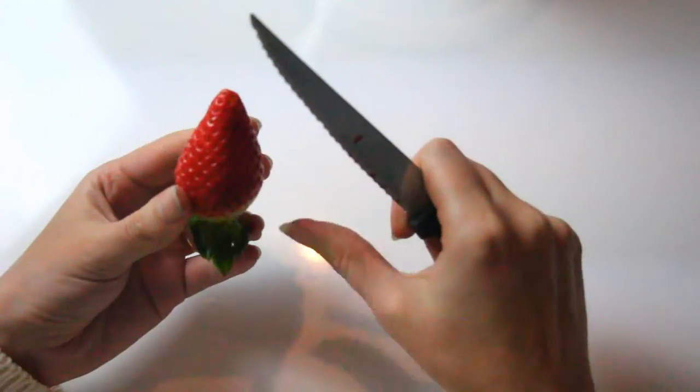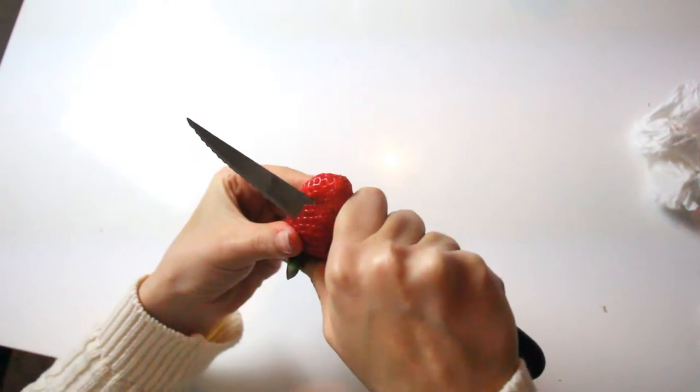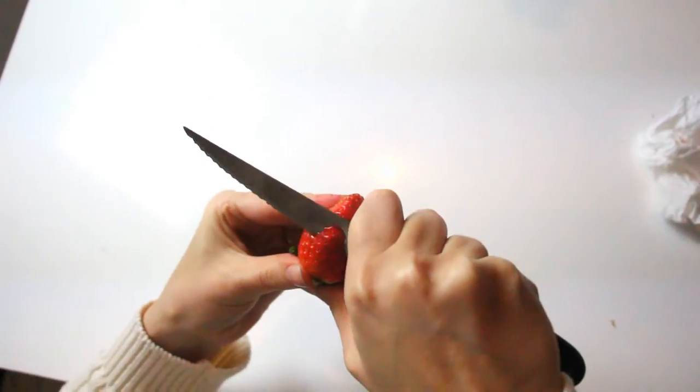Then you'll need strawberries, skewer picks and a vase. We will cut our strawberries in the shape of red roses to make a beautiful edible bouquet.